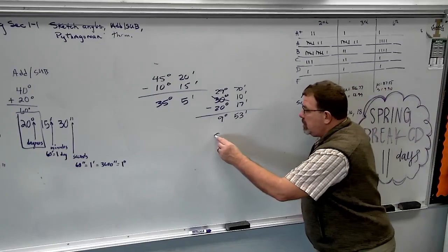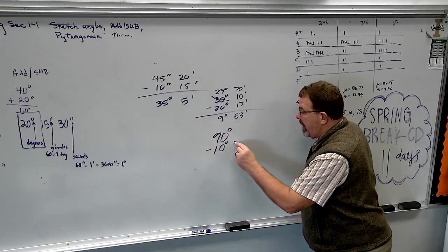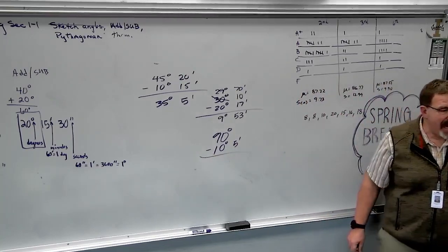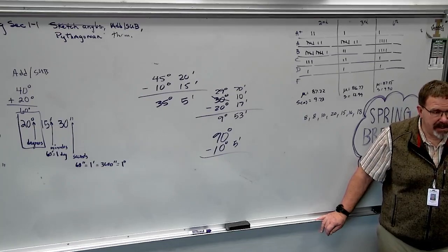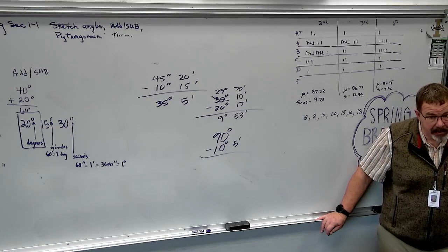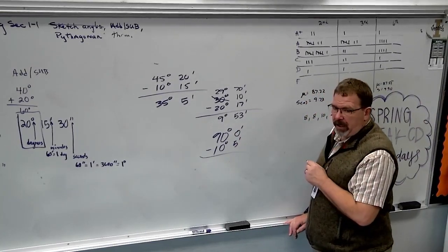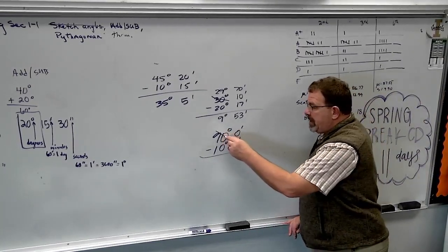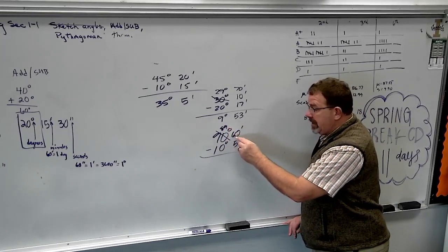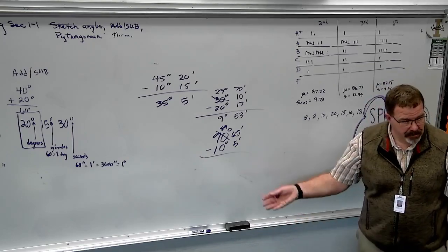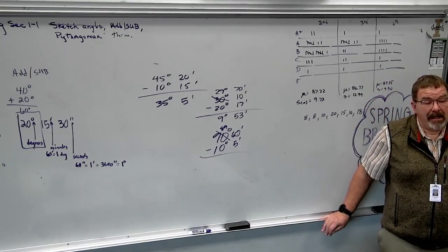What would you do for 90 degrees minus 10 degrees, 5 minutes? There's no minutes in the 90 degrees, but there's always a zero there. We can always put a zero. Now we borrow: 90 becomes 89, and the minutes column becomes 60. Now you can subtract. Same concept — borrow when the minutes column needs it.